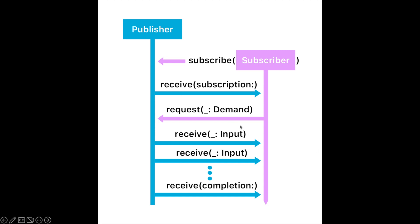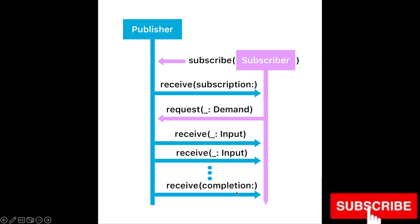The flow between publisher and subscriber is demonstrated in a diagram. Publishers start producing values when we call the subscribe method and pass the subscriber to the publisher. On receiving the subscriber, the publisher invokes the receive method and passes a subscription to the subscriber. On receiving the subscription, the subscriber then demands or requests values from the publisher. The publisher is then free to send either a finite or infinite number of values. If finite, on completion the publisher sends a completion event to the subscriber, or it can produce a failure event in case of errors.